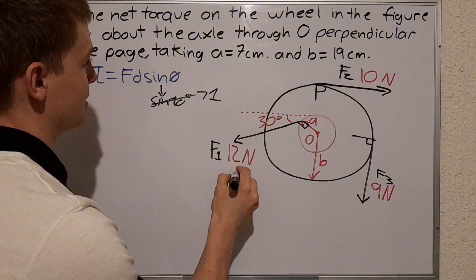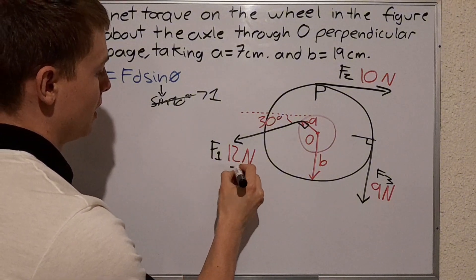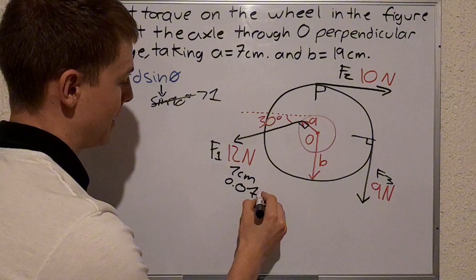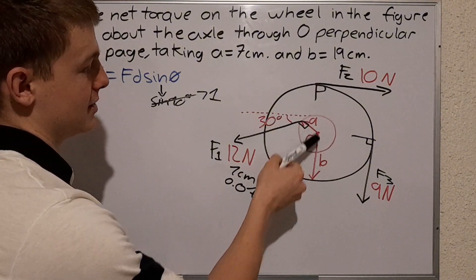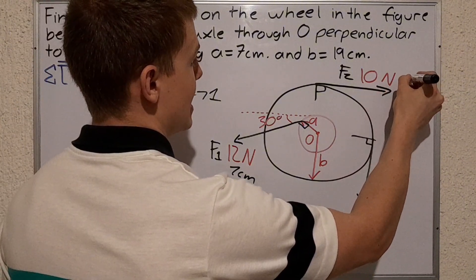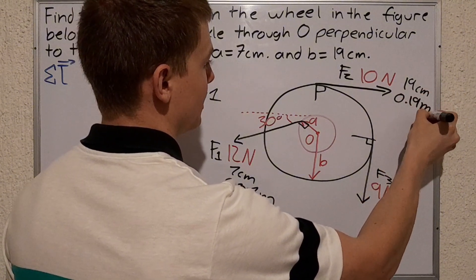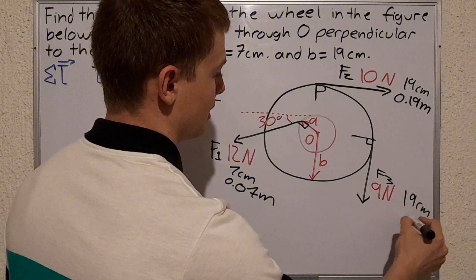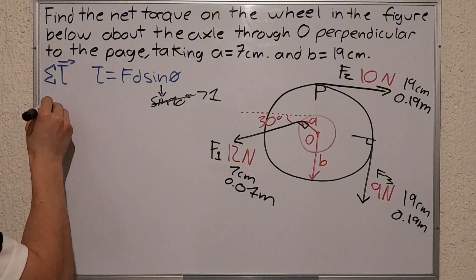For instance, force 1 is at distance A, so its distance is seven centimeters, which is 0.07 meters. Then force 2 is applied at distance B, so it is 19 centimeters which is 0.19 meters. And the same thing happens on force 3, 0.19 meters.